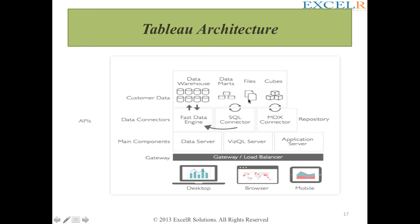We also have files which can be in Excel format, PDF format, or other formats used to get data into your system for analysis. We also have something called cubes. A cube is a multi-dimensional generalization of two or three-dimensional spreadsheets. For example, your company might want to summarize financial data by product or by city, and compare actual and budgeted expenses — that is a cube. A cube is essentially a collection of multiple dimensions of data which one wants to visualize.